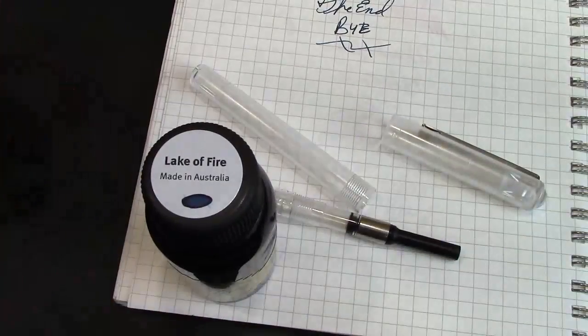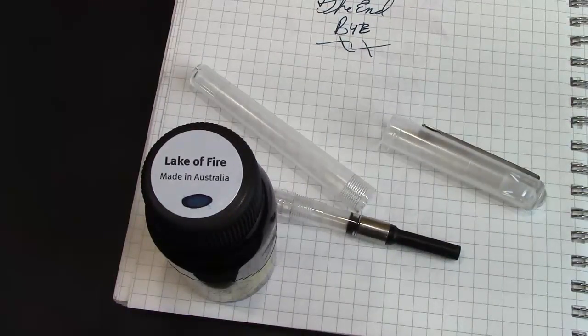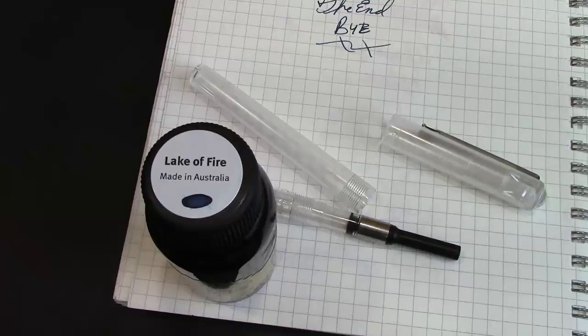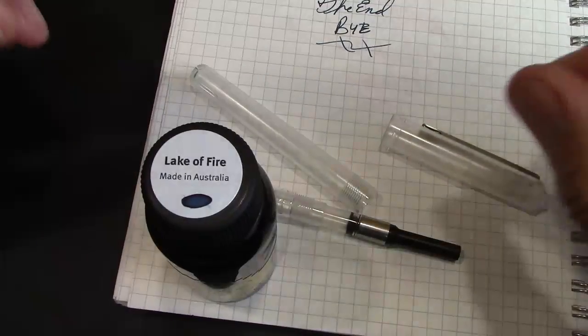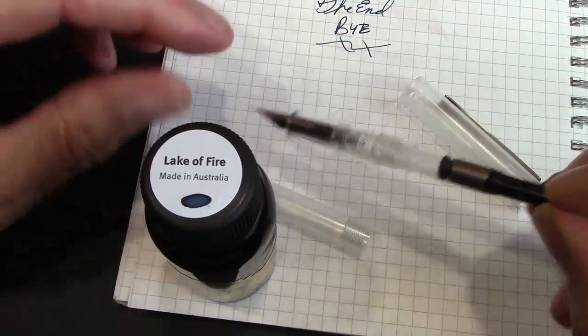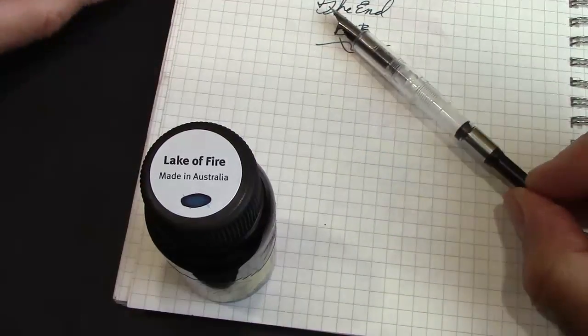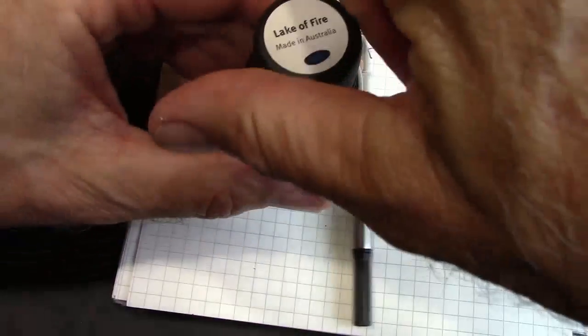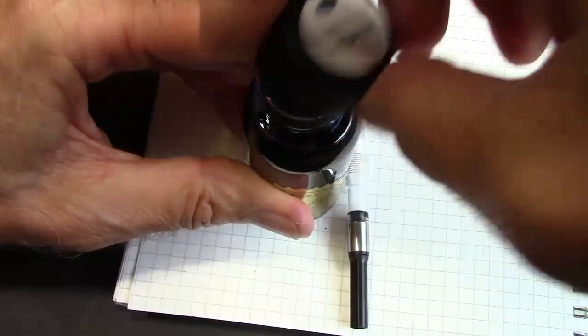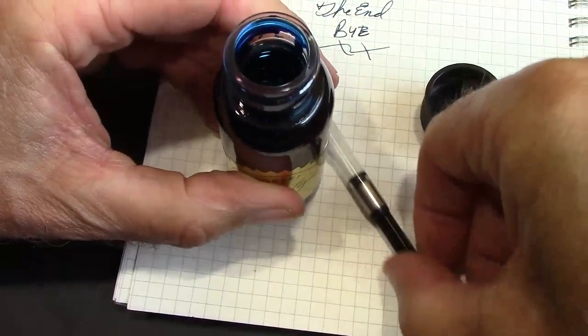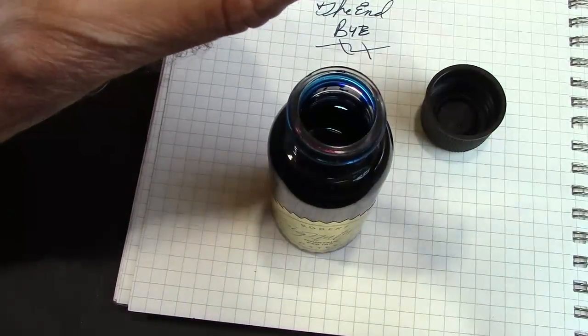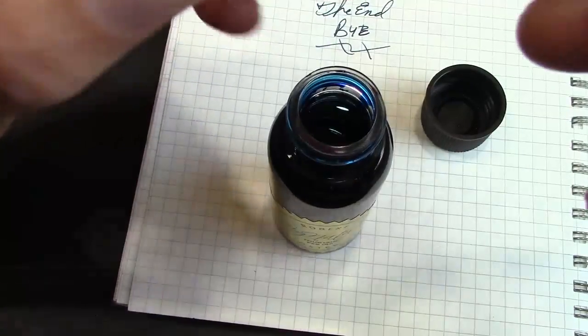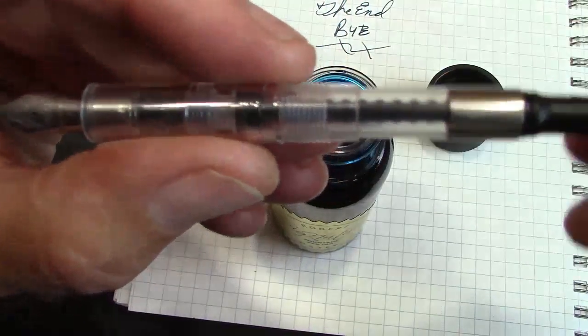The ink I'm going to use, we're going to use the Robert Oster Lake of Fire. And I'm going to use the converter. I'm not planning on keeping this thing inked up and it's going to be easier to clean out if I use the converter. And since a lot of you have been using converters, in a sense, an eyedropper-ing another one of these.